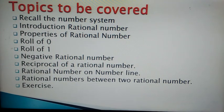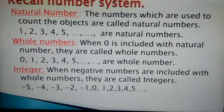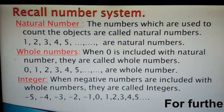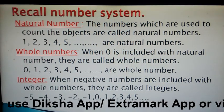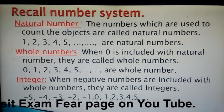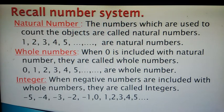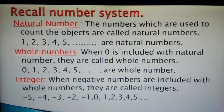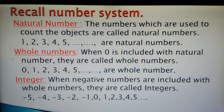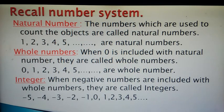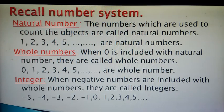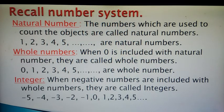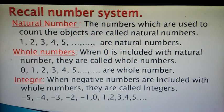Let's start the first topic: recall the number system. We know about natural numbers — in sixth standard we already learned about them, and in seventh standard we revised them. The numbers that start from one and go to infinity are called natural numbers: 1, 2, 3, 4, 5, and so on till infinity. These are also called counting numbers because they are used to count objects.